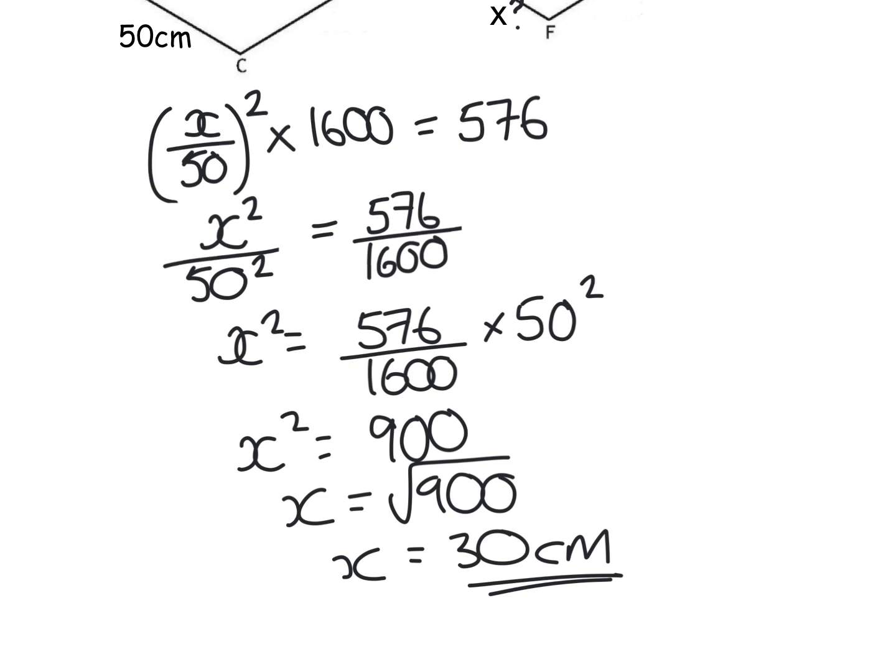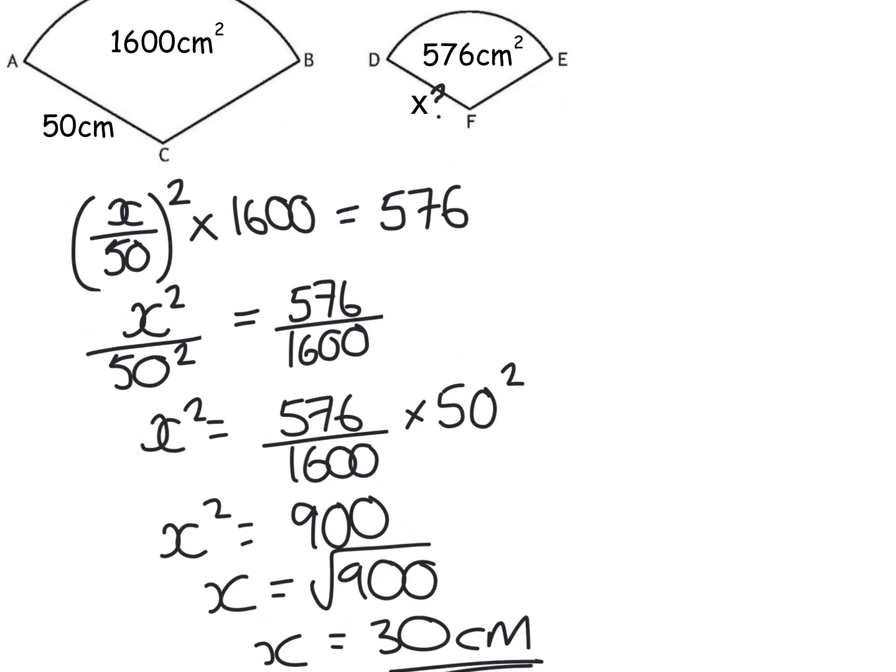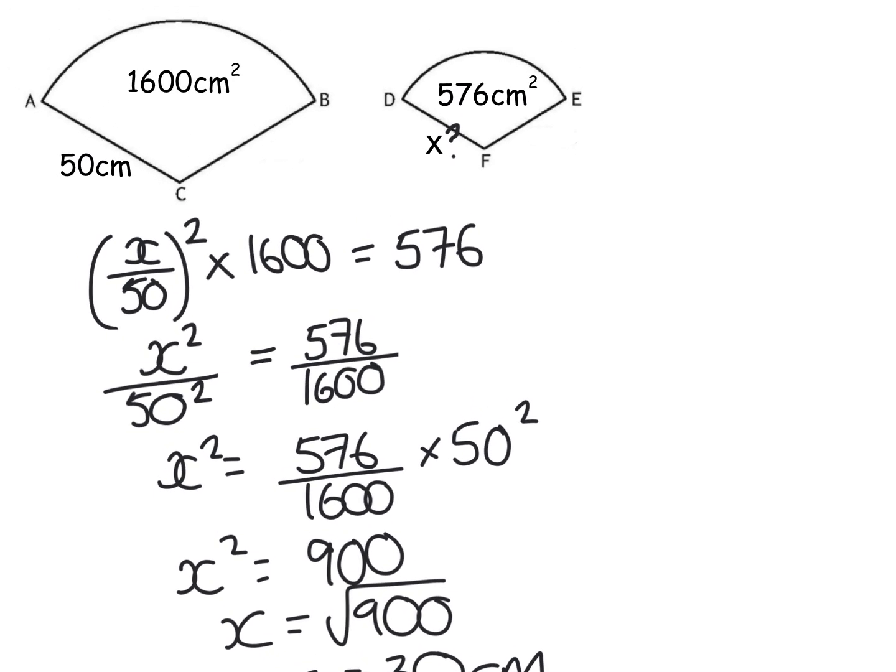Okay. Again, very quickly, just in case, I'm just going to show you the other method. So the other method would start by getting your area scale factor. So your area scale factor would be 576 over 1600. And then your length scale factor or your reduction scale factor would be the square root of that because it was an area question.